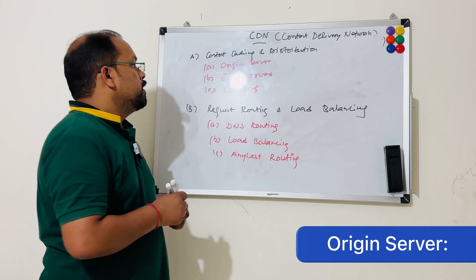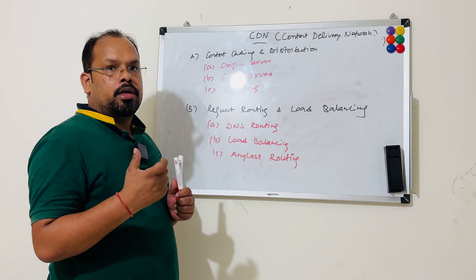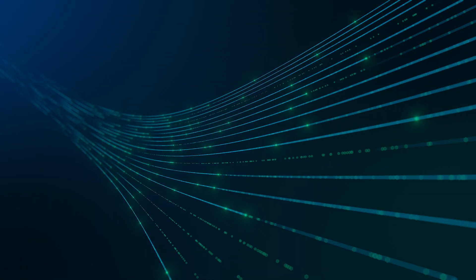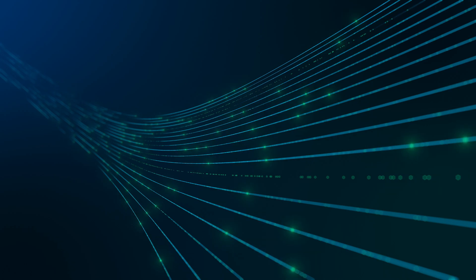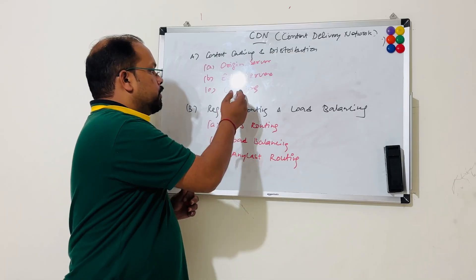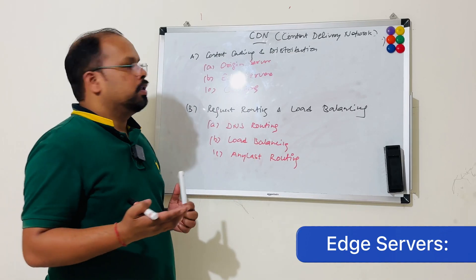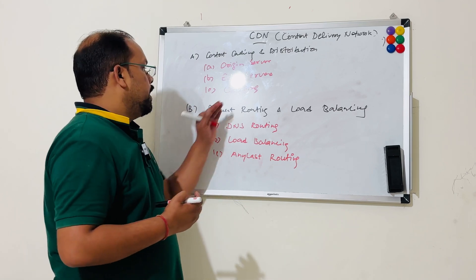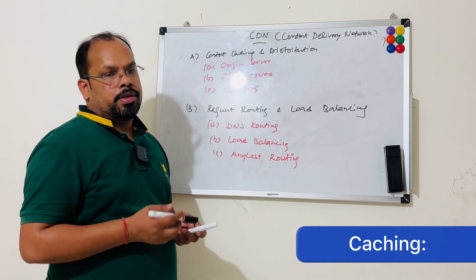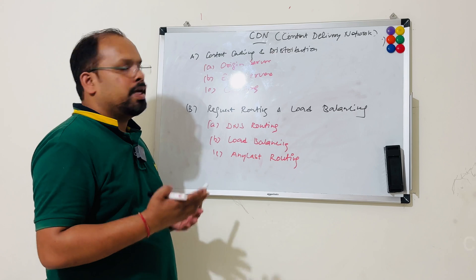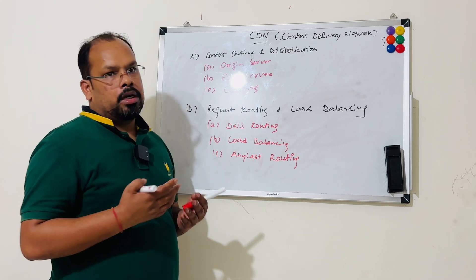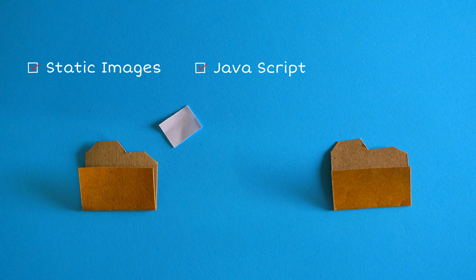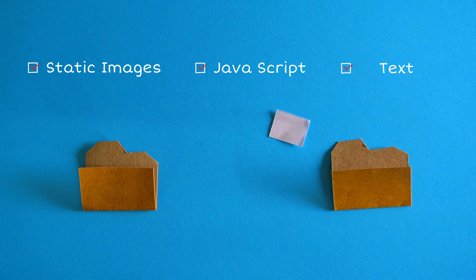The origin server is the main CDN server, which basically distributes data into the edge servers. An edge server, or PoP, is located nearby to customers. Caching is the basic fundamental — we cache data on the server, like static images, JavaScript files, text, and so on.